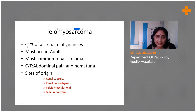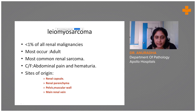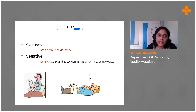Leiomyosarcomas account for less than one percent of all renal malignancies and are most commonly seen in adults, presenting with abdominal pain and hematuria. They arise from the renal capsule, renal parenchyma, pelvic muscular wall, as well as the main renal vein.